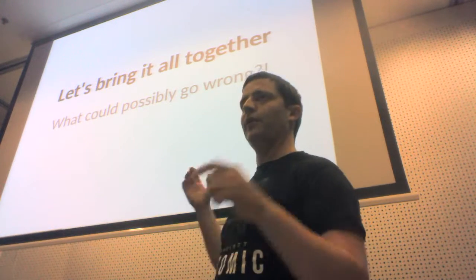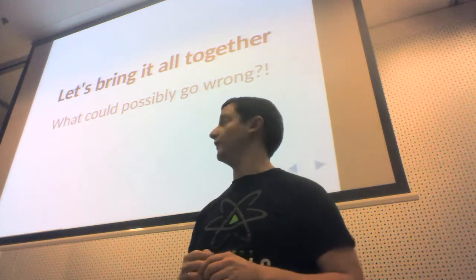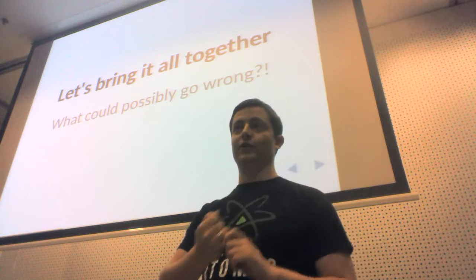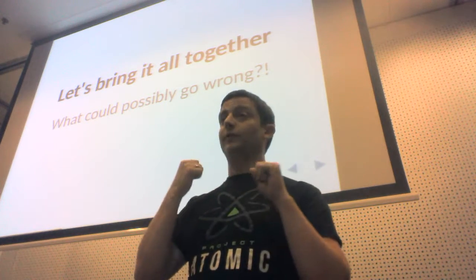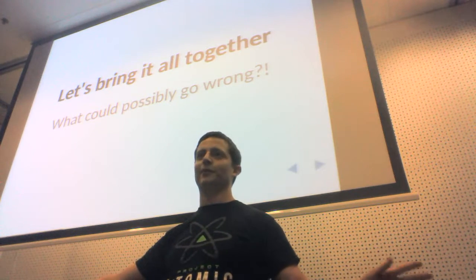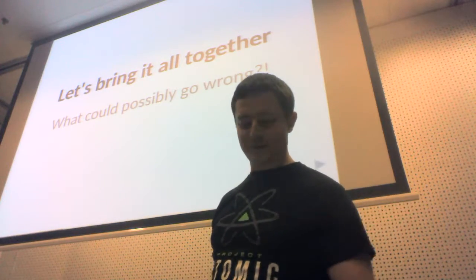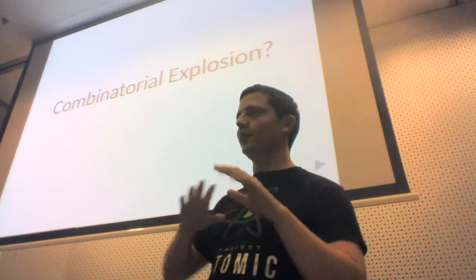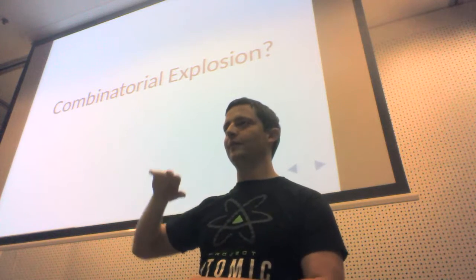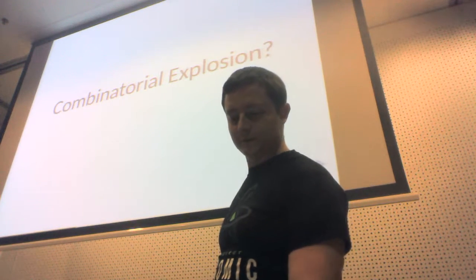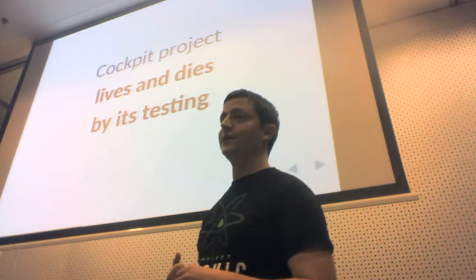Let's bring it all together. We have Docker APIs and different system APIs: user account management, disk management, RAIDs, network interfaces. And luckily — sarcastically speaking — upstream APIs never change, they always stay stable, always thoroughly tested to catch every single bug, and all distributions are the same. So what could possibly go wrong? Well, we have a combinatorial explosion: all these system APIs running on different operating systems, maybe even different versions — you can't test it manually, it's just way too much. So it's safe to say that the project lives and dies by its testing.